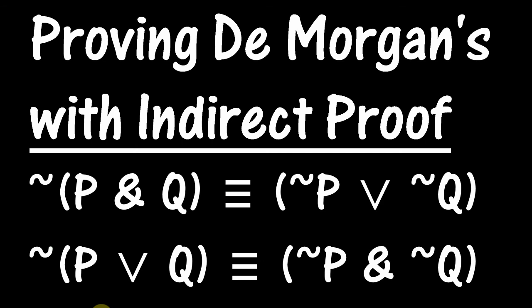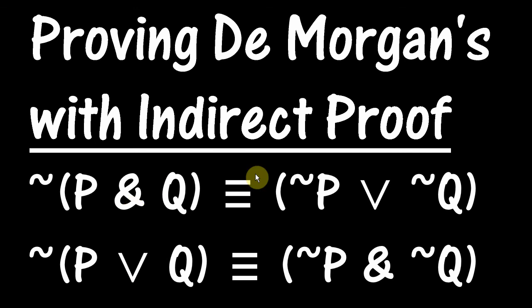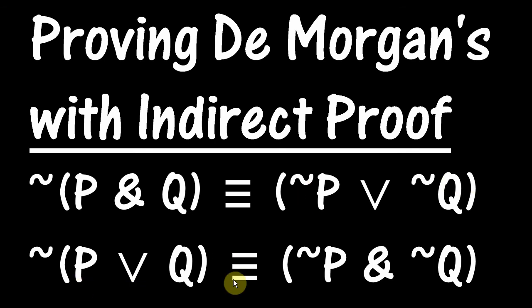Hello, this is Dr. Fergus Denehoe, and in this video we're going to be going over symbolic logic proofs of both versions of De Morgan's theorem. These are two of our rules of replacement, and each one says that the negation of either a disjunction or a conjunction is equivalent to the opposite of that — in the conjunction's case it's equivalent to a disjunction of the negation of each part, and in the disjunction's case it's equivalent to the conjunction of both being false.